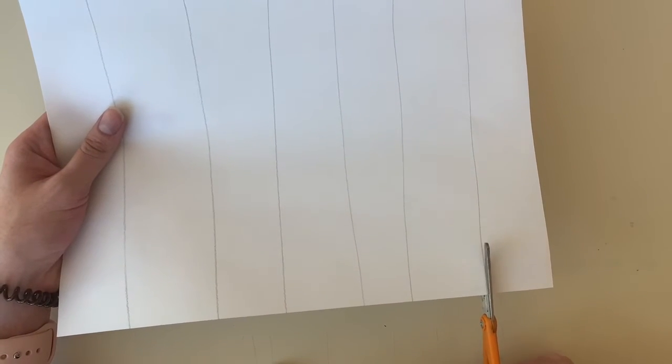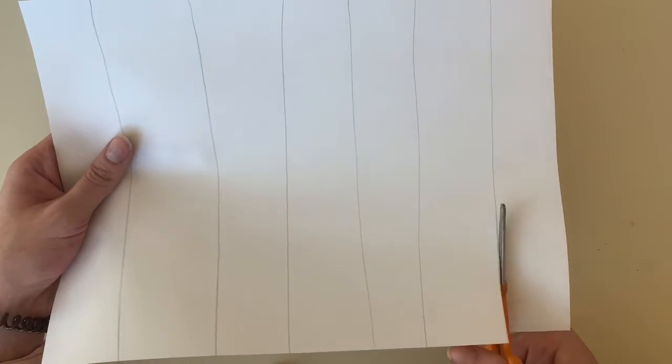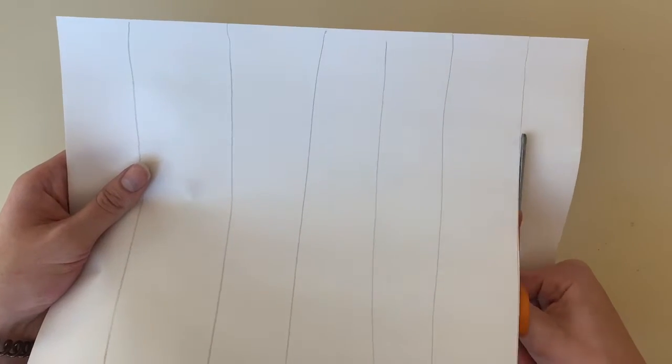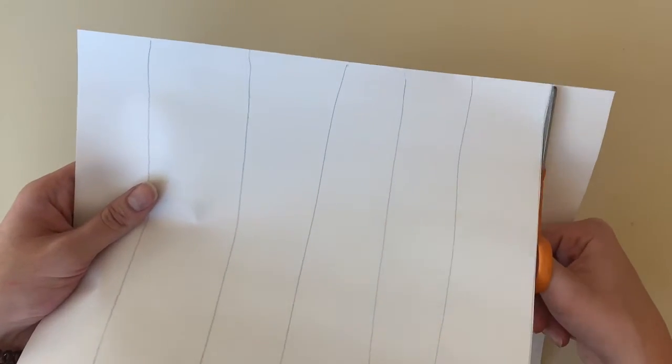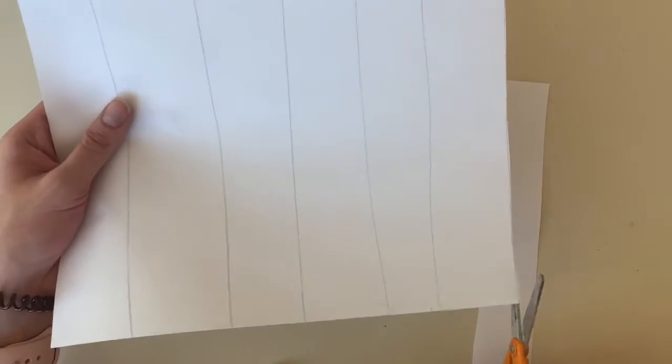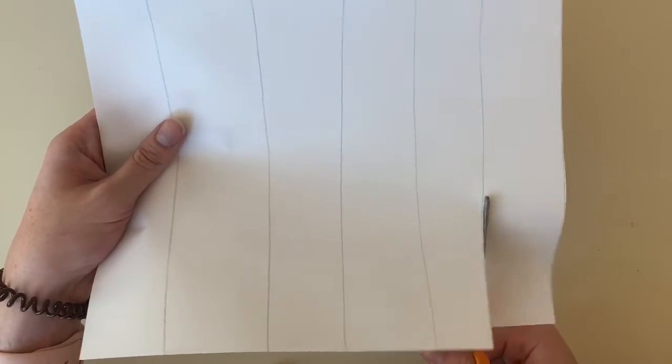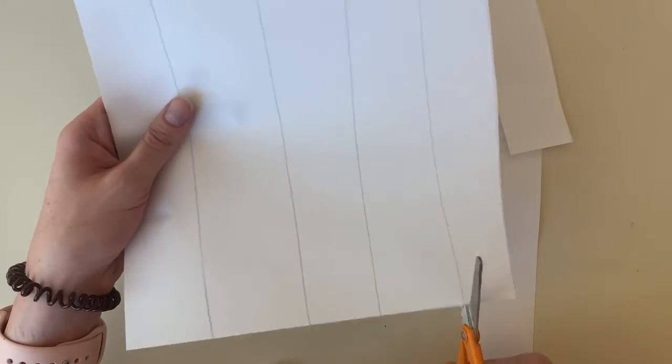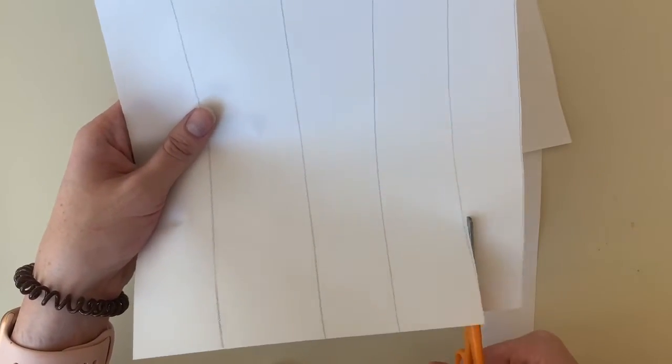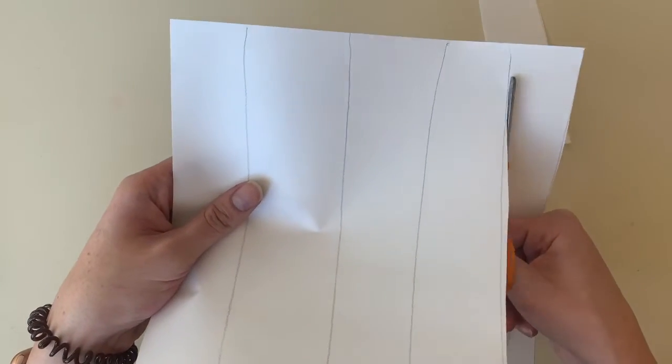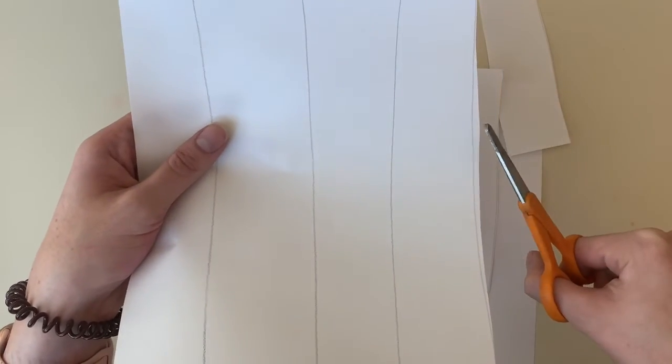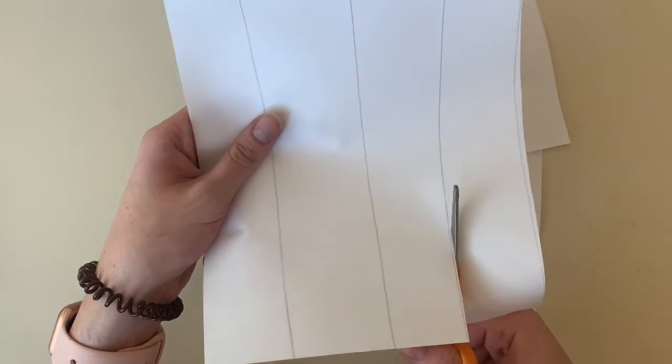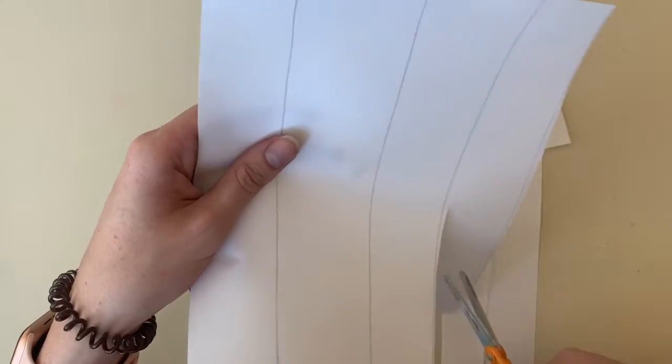So here I am on the opposite side of my paper, slowly and carefully chomping that line I made. Boom, we already have one done. Now I'm just following along for the rest of my lines and making strips of paper. It doesn't have to be perfect, as you can see I didn't go exactly on my line, but it's a good guide to help us out.